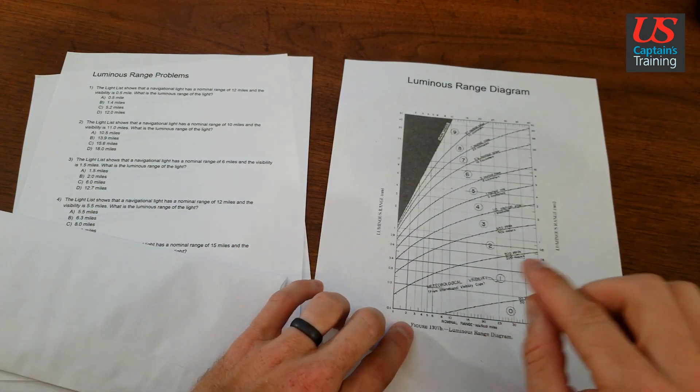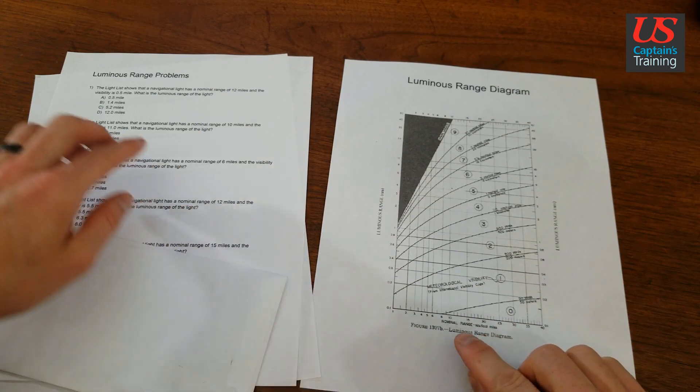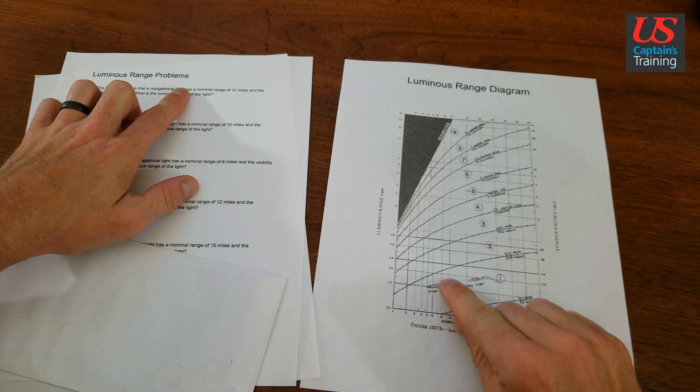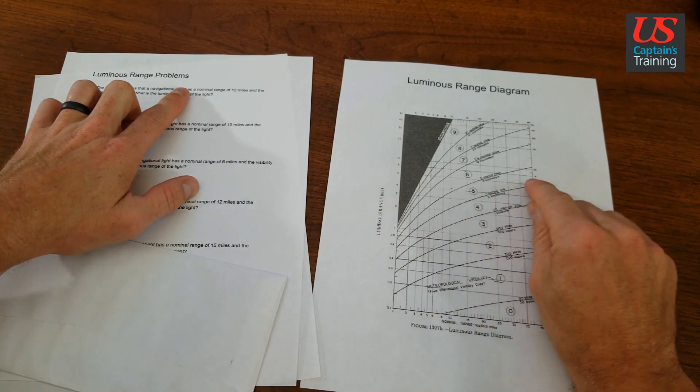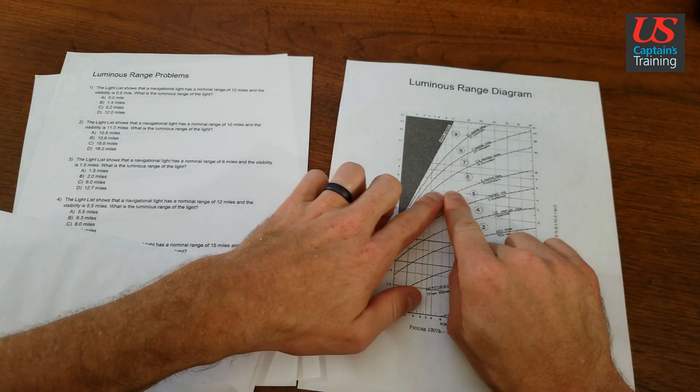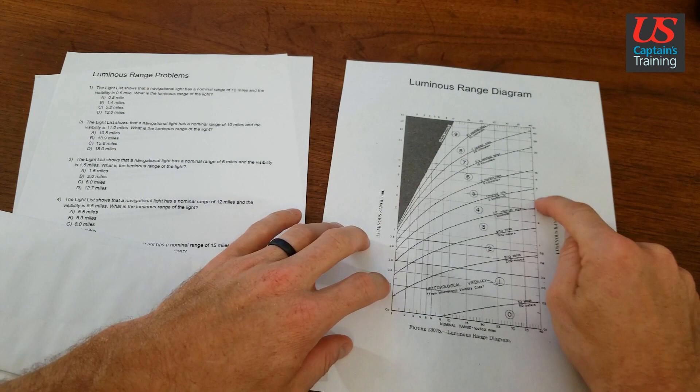So again, to use this luminous range diagram, get nominal range from the problem. Say it's 10. You follow it up until you hit the correct visibility curve. Then once you hit that curve, you follow it over and it gives you luminous range.